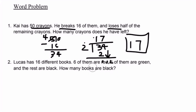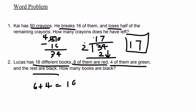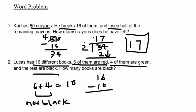Number 2: Lucas has a total of 16 different books — 6 of them are red, 4 of them are green, and the rest are black. How many books are black? This is another two-step problem. First, let's add 6 plus 4, which equals 10 — these are the books that are not black. Now we subtract 10 from 16: 16 minus 10 equals 6. So we have a total of 6 books remaining. Therefore, Lucas has 6 black books, 6 red books, and 4 green books.